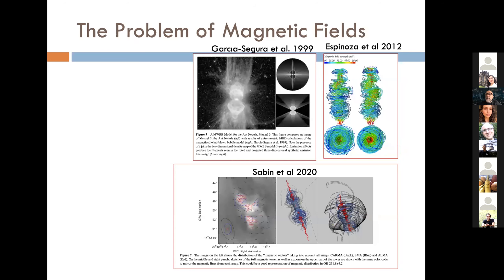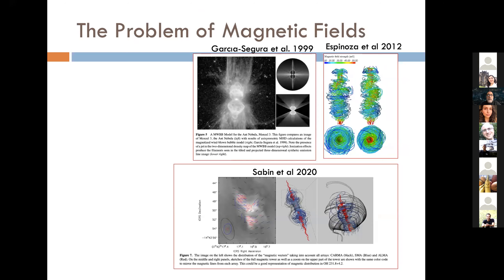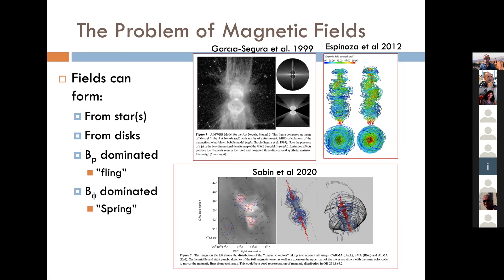There's the problem of magnetic fields, which we believe are going to play a strong role, and we've seen really great models and observations give us indications of this. Going back to our paper, this is Guillermo's work from 1999 — we just saw an example of him continuing that work and showing how much magnetic fields can do in terms of shaping. Fields can form from the star or stars, they can form from disks around the stars, you can get fields dominated by poloidal fields — in a disk that would be the fling-dominated model — or dominated by B-phi, which are magnetic tower or spring-dominated models. So there are lots of questions about which ones we should choose for an individual object.